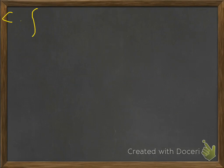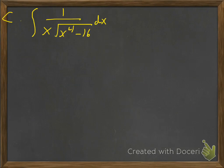Let's take a look at example c. This is 1 divided by x times the square root of x⁴ minus 16, dx. We did one that ended up being arc sine and one arc tangent, so this one might be arc secant. Let's see what we can do here.